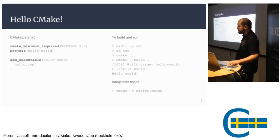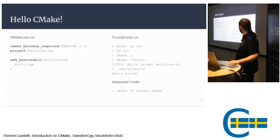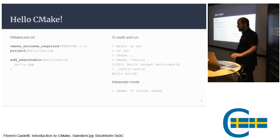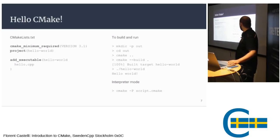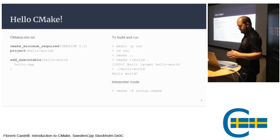On the command line, you create a folder called 'out', go into it, tell CMake to find the files in the parent folder and build into the current folder. This calls the actual build tool — by default make — which outputs that it built the target hello_world. You can then run hello_world. That's the basics of CMake.